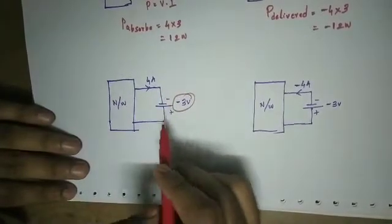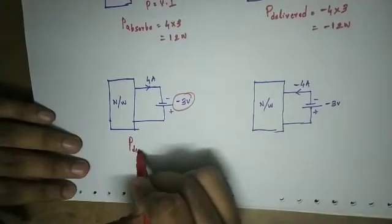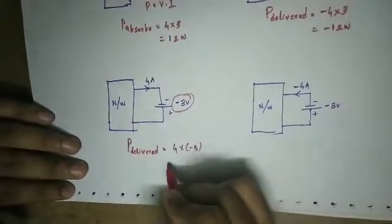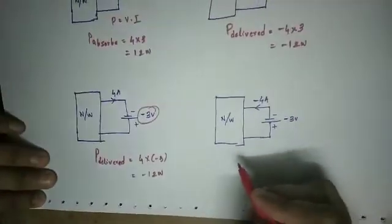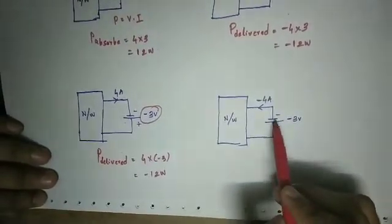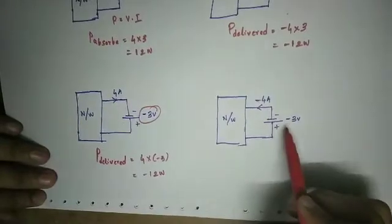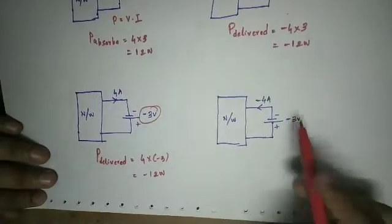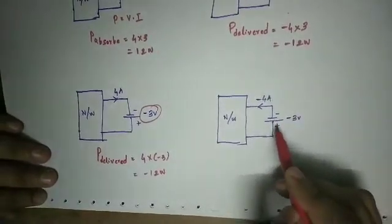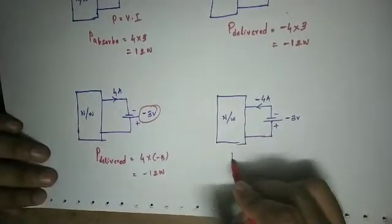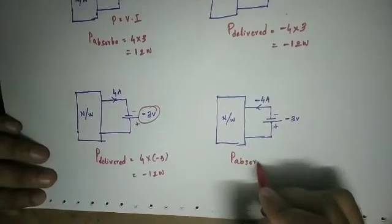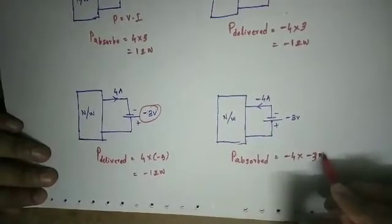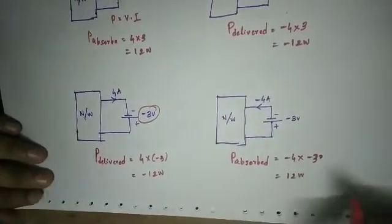Here current is negative. We can find delivered power: delivered power is equal to minus 3 volts. For the next network, current leaves from the negative terminal, so this is an equivalent circuit. Current enters the positive terminal and leaves the negative terminal, so this is absorbed power. Absorbed power is equal to minus 4 into minus 3, which equals 12 watts.